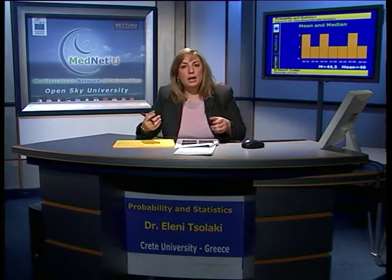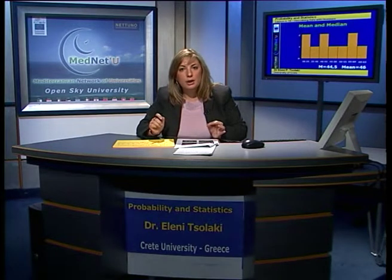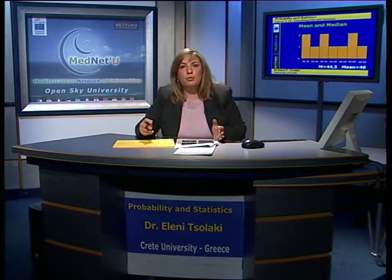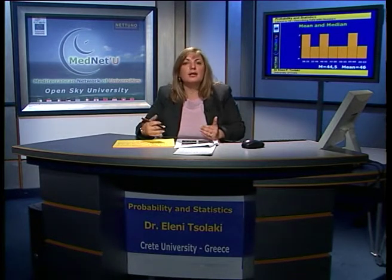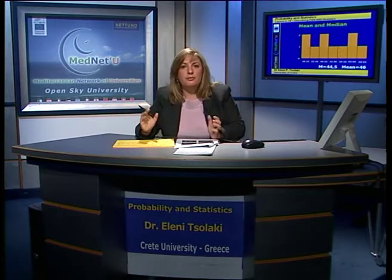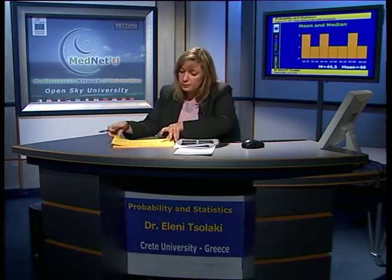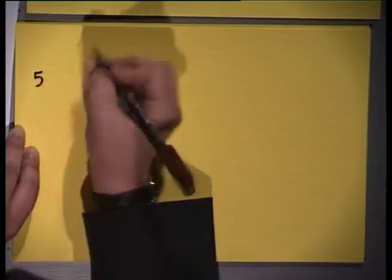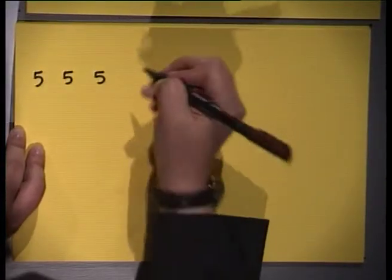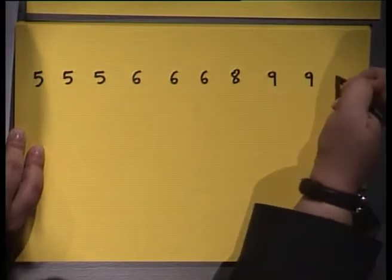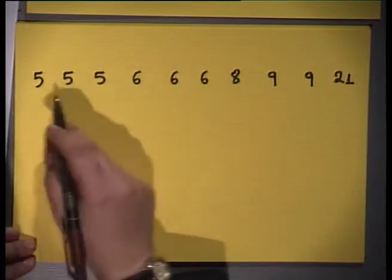Now we calculate the median. To calculate the median we have to order our data from the smallest value to the highest. If we do not do that, every time we change the order we may find a different median, and there is only one median for each set of data. We reorder and find three fives, three sixes, an eight, two nines, and one twenty-one — ten points total.